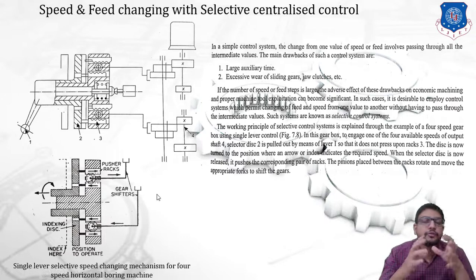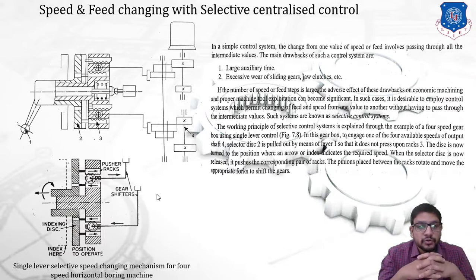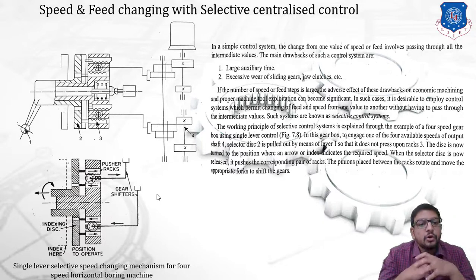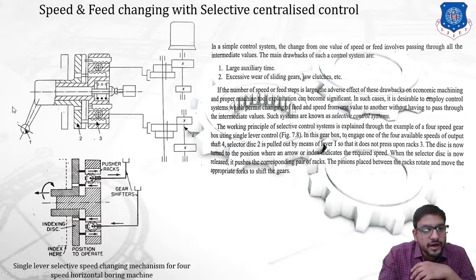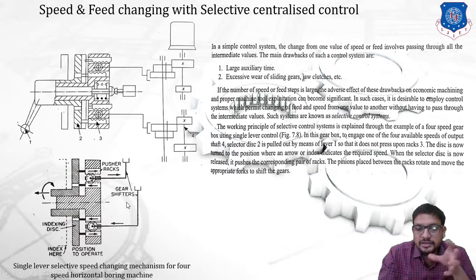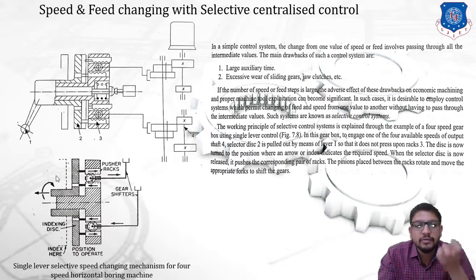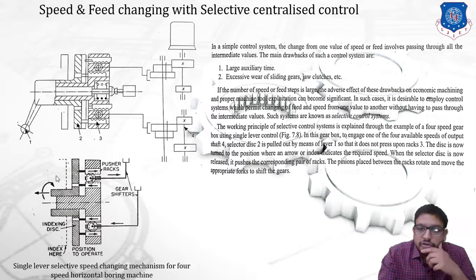To understand this, I have taken an example of a four-speed gearbox which can be operated using a single lever control. This arrangement is for a horizontal boring machine. This is a sectional view shown, and the more simplified view is shown on the bottom side so you can easily understand. This arrangement uses a rack and pinion technique to transfer and move the shifting fork.